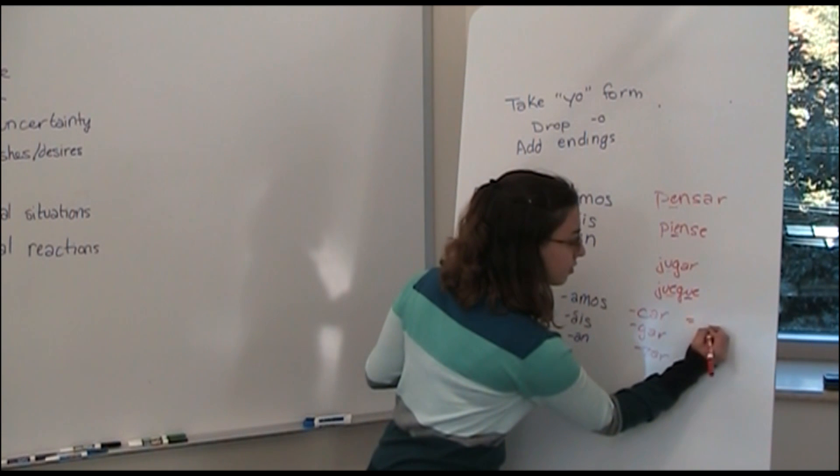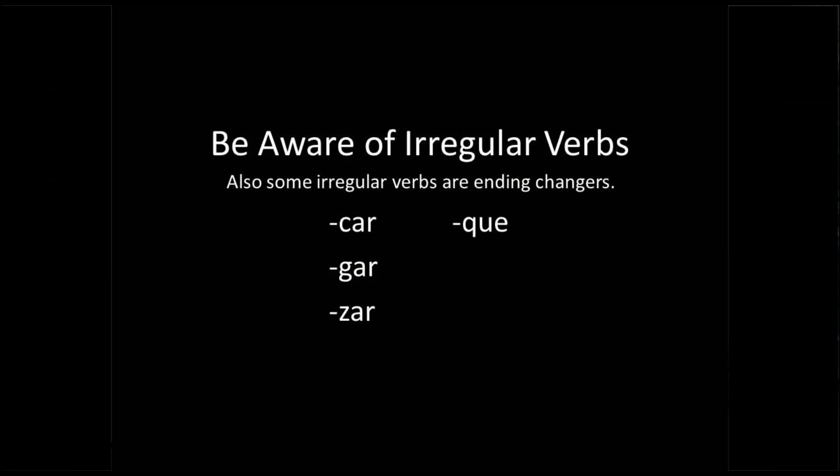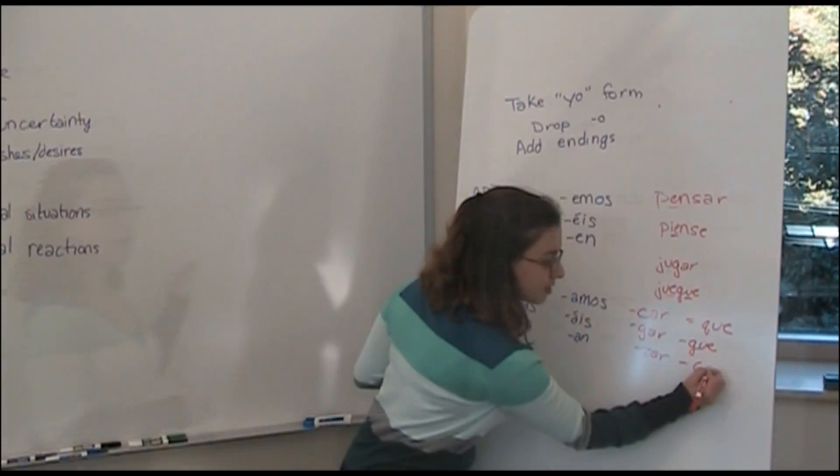So with car verbs, they turn into que at the end, gar turns into gue, and then zar turns into ce.